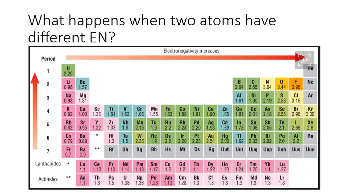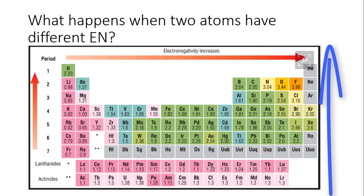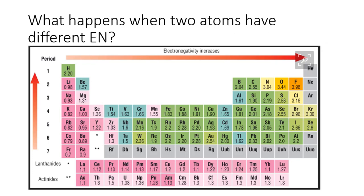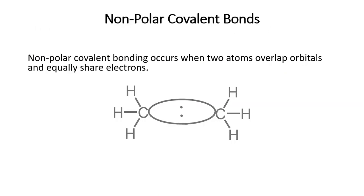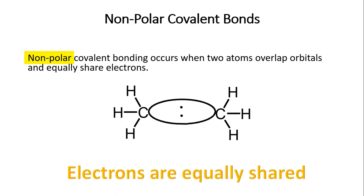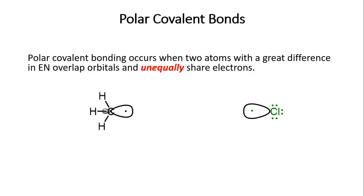Now let's talk about what happens when two atoms differ in electronegativity. Electronegativity increases from left to right across the periodic table and from bottom to top, with fluorine being the most electronegative. In a non-polar covalent bond, electrons are shared equally — equidistant between atoms — because the electronegativity difference is not large enough to favor one atom. In a polar covalent bond, electrons are unequally shared due to an electronegativity difference.